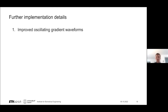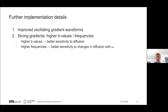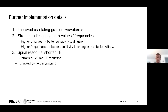In addition to using the improved oscillating gradient shapes, we have used our high-performance gradient system, which allows us to achieve higher b-values and/or higher frequencies. Higher b-values give better sensitivity to diffusion, while higher frequencies give better sensitivity to changes in diffusivity with frequency, because a higher frequency provides a greater difference in diffusivity relative to zero frequency. The final part of our implementation was using spiral readouts, which enabled us to shorten the echo time — particularly enabled by having a field monitoring setup, practically necessary for reconstructing spiral images — allowing a reduction of around 20 milliseconds in echo time.